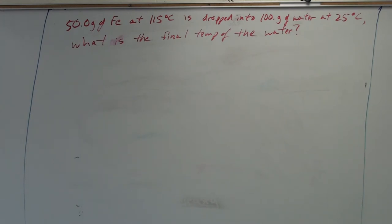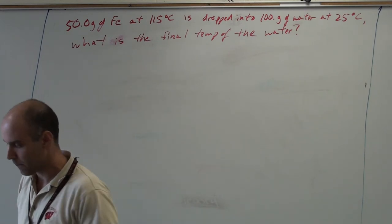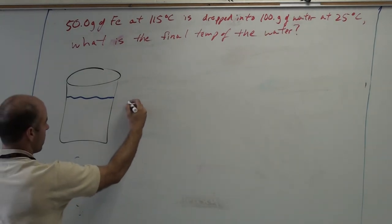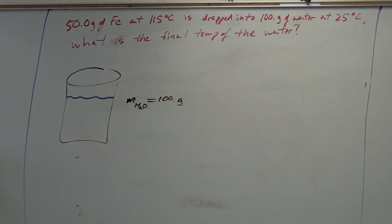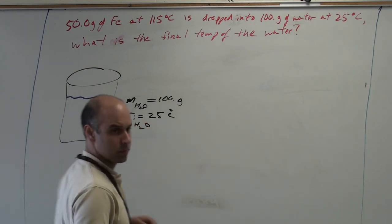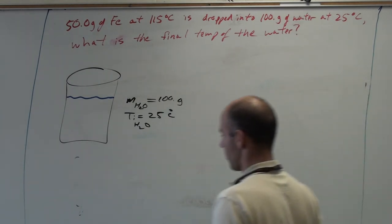So, here a picture might be helpful. We've got a beaker. It's filled with water. How much water? 100 grams. What is the initial temperature of the water? 25 degrees Celsius.